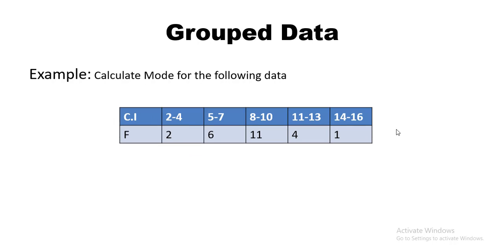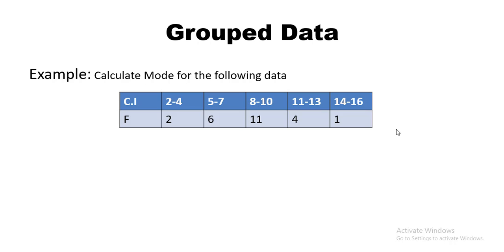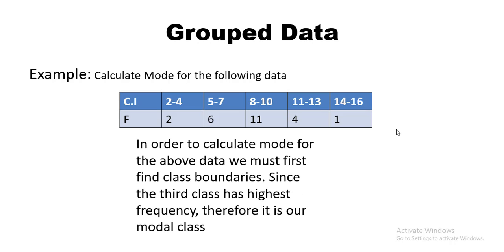Moving on to grouped data — we need to calculate the mode. First, we find the class boundaries. Since the third class has the highest frequency, it is the modal class. We identify the modal class by looking for the class with the highest frequency, which in this case is 11.